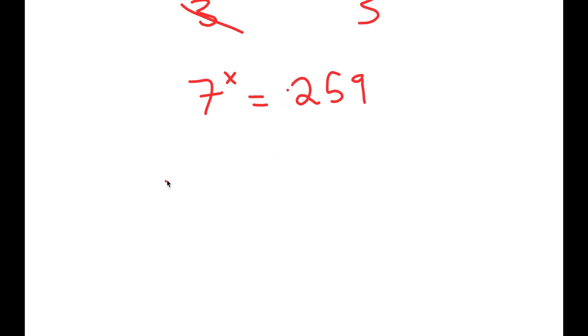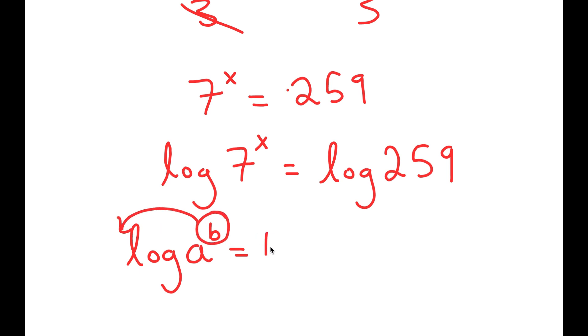Now, from here, I'm going to take the log on both sides. And the reason I did this is because logarithms have a helpful property that state that if I have something in the form log a to the power of b, I can move this exponent b to the front, so this turns into b times log a.